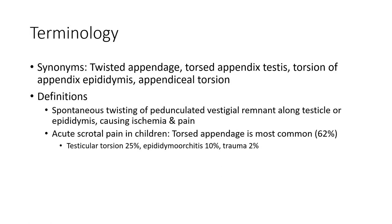Synonyms include Twisted Appendix, Torsion of Appendix Testis, and Appendiceal Torsion. Definition: spontaneous twisting of the appendix testis or appendix epididymis causing ischemia and pain. Torsion of the appendix is the most common cause of acute scrotal pain in children at 62%, followed by testicular torsion at 25%, epididymitis at 5-10%, and trauma at 2%.